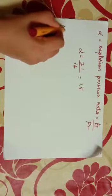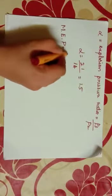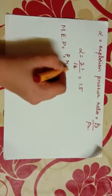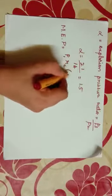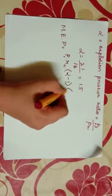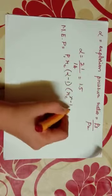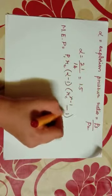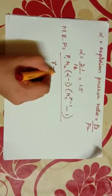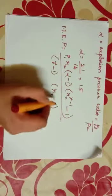Then MEP, that is mean effective pressure, is equal to P1 Rc into alpha minus 1 into Rc raised to gamma minus 1 minus 1, divided by gamma minus 1 Rc minus 1.